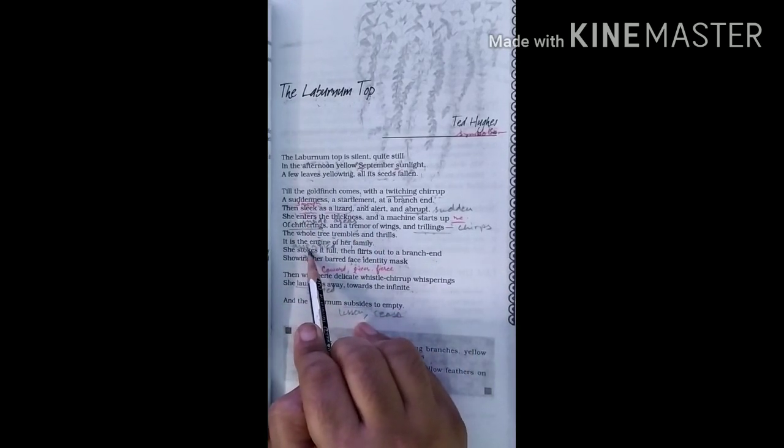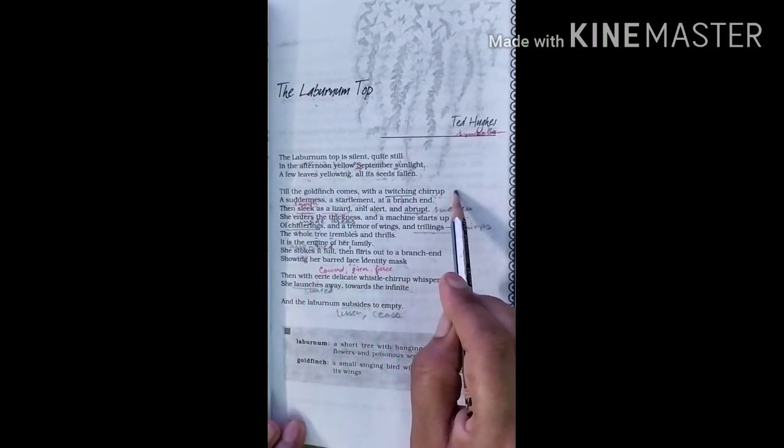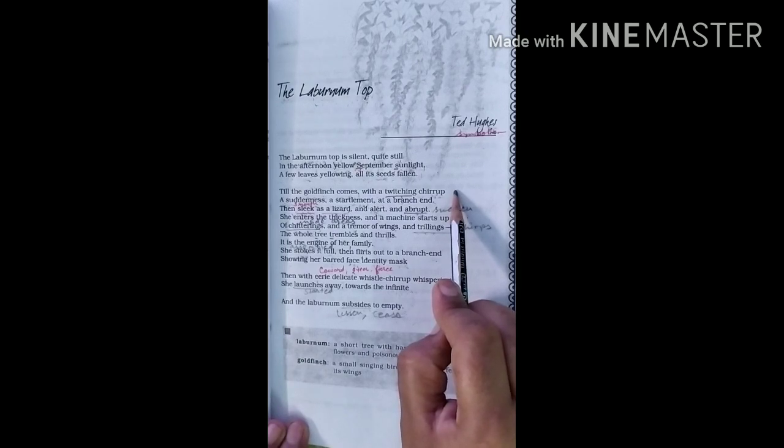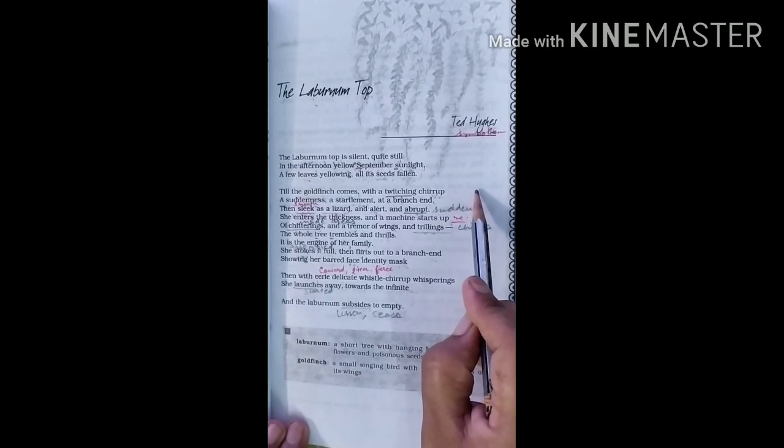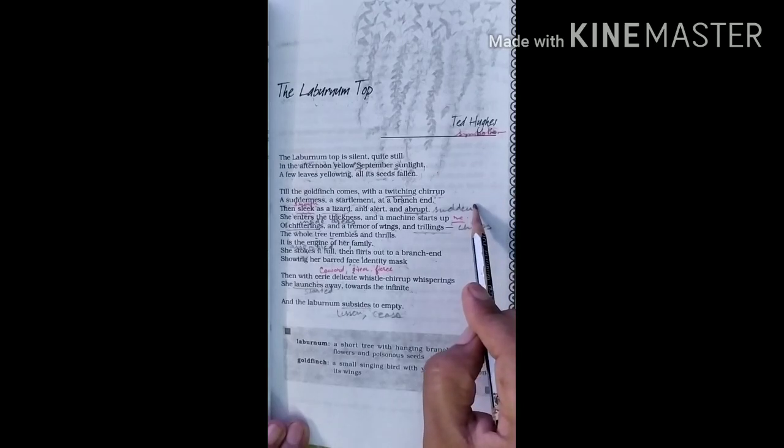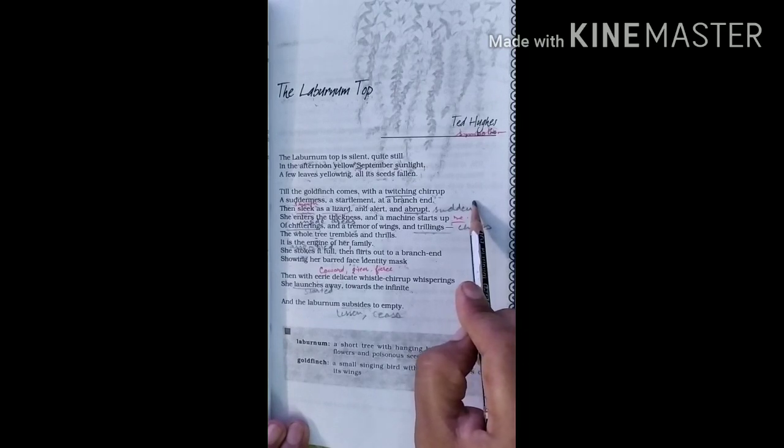Now understand the meaning of this second stanza. The death-like scene however changes as soon as the goldfinch comes with a twitching chirrup. Goldfinch is a bright yellow colored bird. Twitching chirrup means short chirrup sounds. The bird is quite precocious while sitting at a branch end of the tree and has sudden quick movements. Perhaps it is looking out for any danger that might be there.